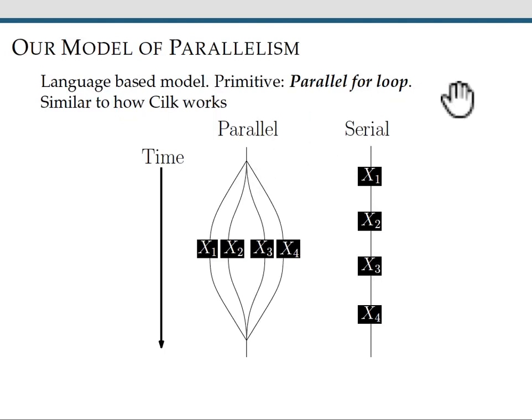Specifically, we looked at solving this problem in a language-based model of parallelism with the primitive of a parallel for loop. This is similar to how Cilk works. Here's a depiction of a parallel for loop and a serial for loop. A parallel for loop allows you to perform tasks x1 through x4 concurrently rather than sequentially.